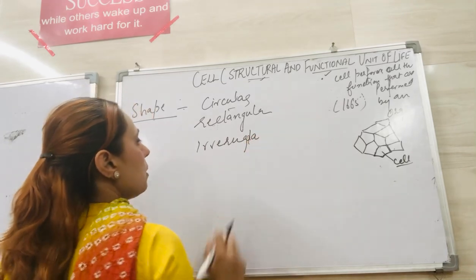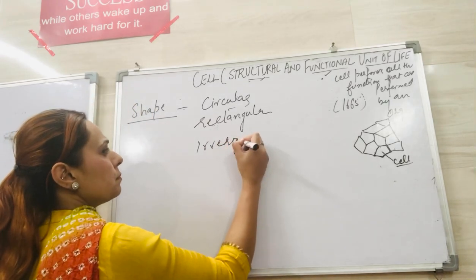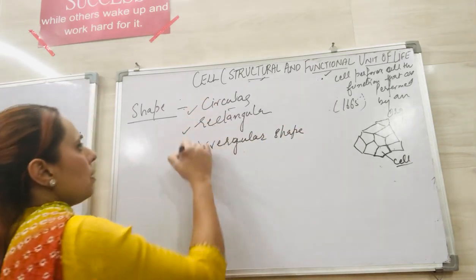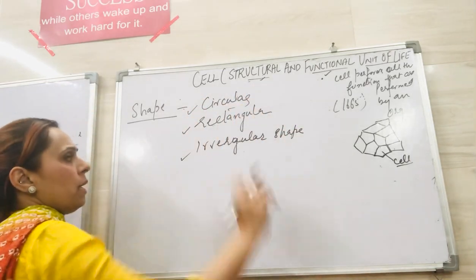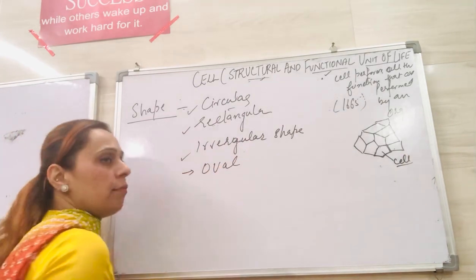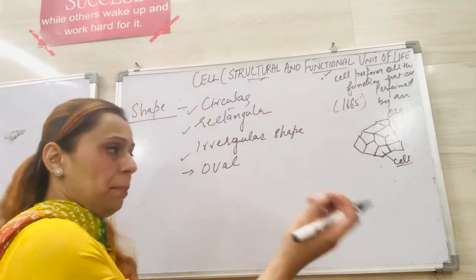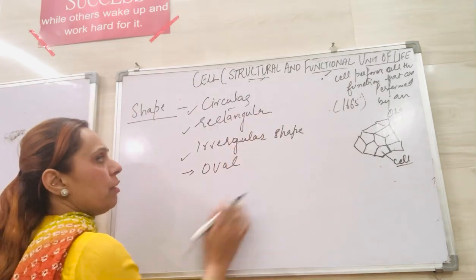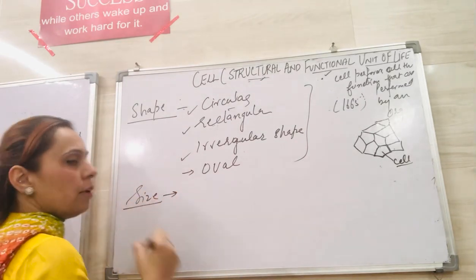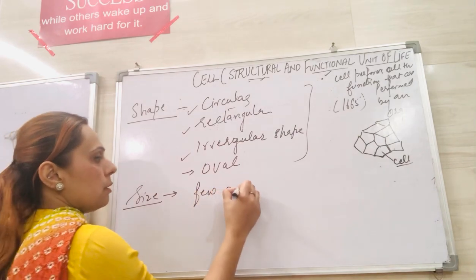It could be oval-shaped, like RBCs and WBCs, or like Amoeba, Paramecium, and plant cells — all of these have different shapes. The size of the cell varies from a few nanometers to millimeters.